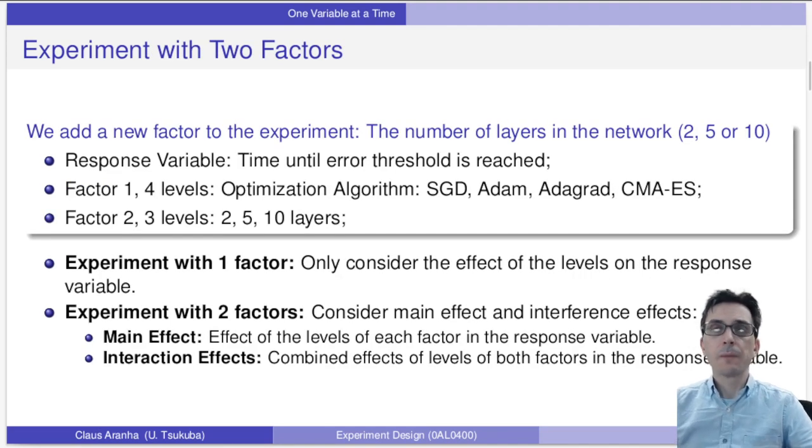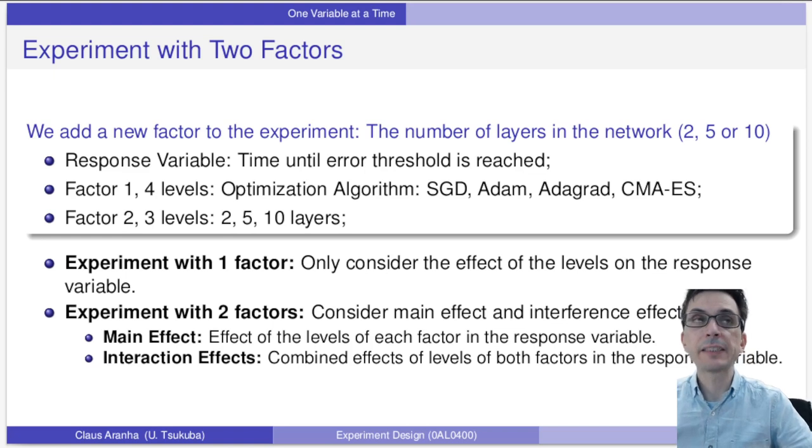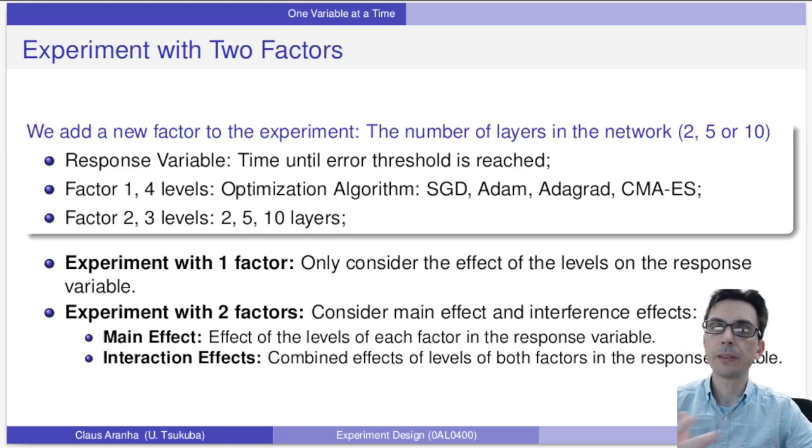Now for this class, we're going to add a second factor to the experiment: the number of layers in the network. Let's say we're considering two layers, five layers, or ten layers. The response variable does not change - it's the time until the error threshold is reached. Factor one has four levels, optimization algorithm, and factor two has three levels: two, five, and ten layers.